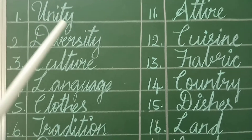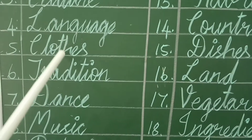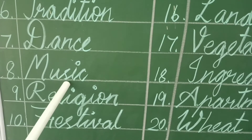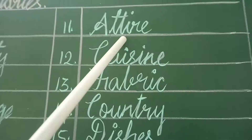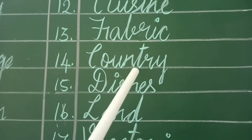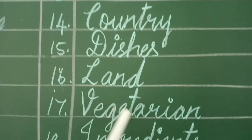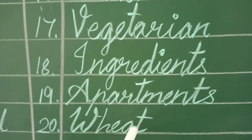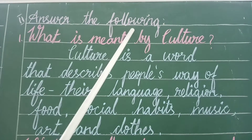Unity, diversity, culture, language, clothes, tradition, dance, music, religion, festival, attire, cuisine, fabric, country, dishes, land, vegetarian, ingredients, apartments, wheat.